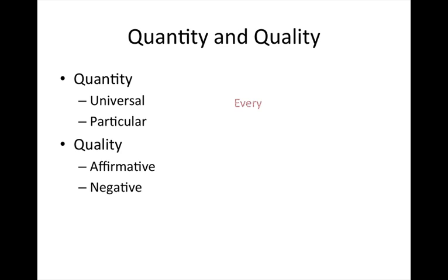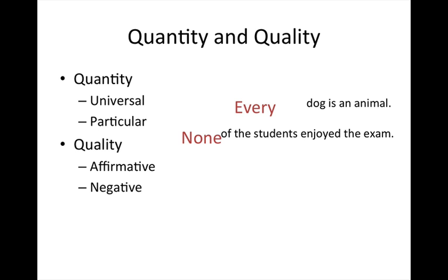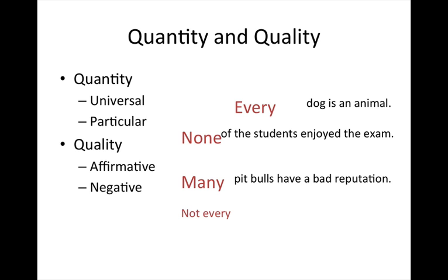Let's look at some examples. 'Every dog is an animal' is a universal affirmative claim. 'None of the students enjoyed the exam' is a universal negative claim. 'Many pit bulls have a bad reputation' is a particular affirmative claim. And 'not every cake is delicious' is a particular negative claim. Remember, we want to take every ordinary language sentence that is either true or false and resolve it into one of the four types of categorical claim in standard form. Right now these examples are sentences that are not in standard form, but what we did was identify the quantity and the quality.